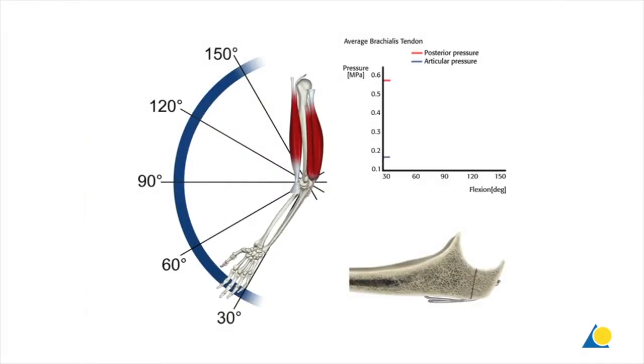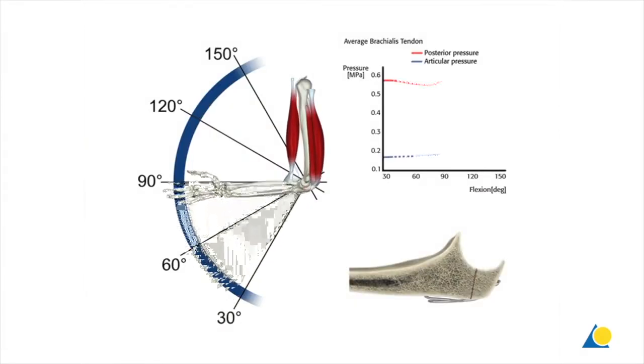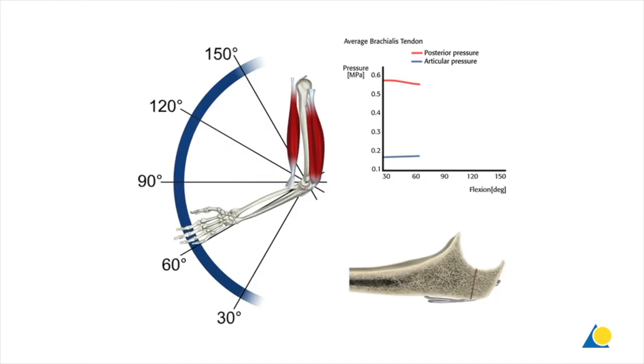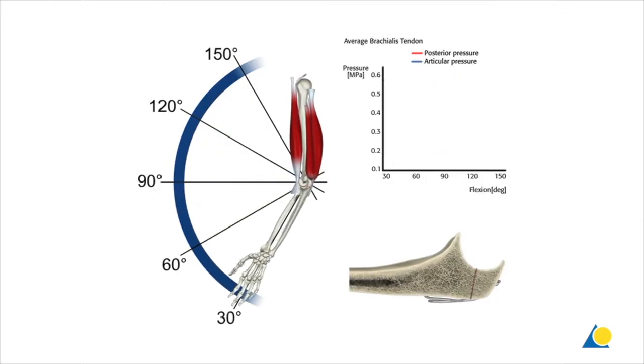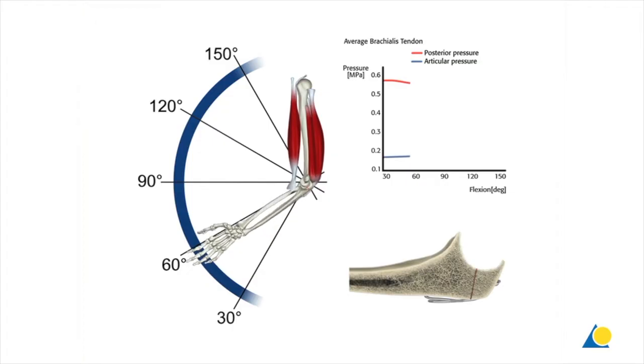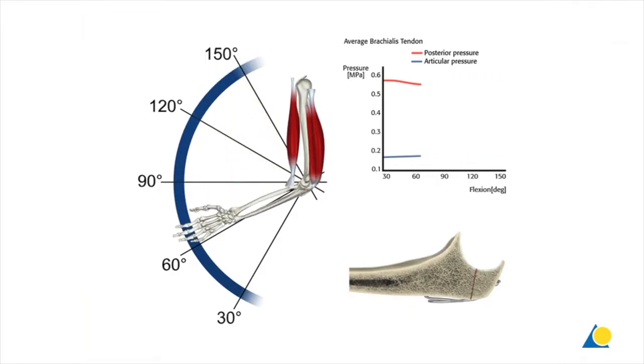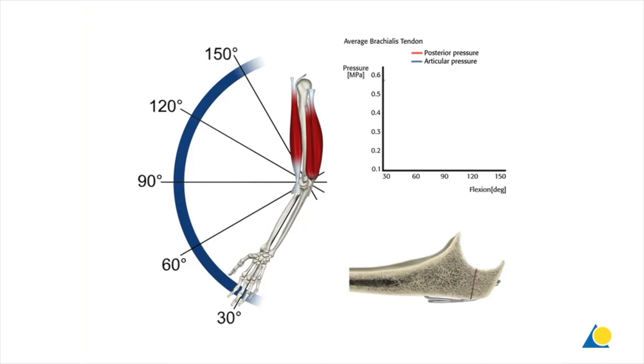Here is the tension band principle, demonstrated on a simulated olecranon fracture repaired using a figure-of-eight tension band. Pressure measurements are recorded from the articular surface and the outer cortex. When the elbow is flexed actively using the biceps muscle, the compression force across the articular surface is maintained throughout the range of movement.